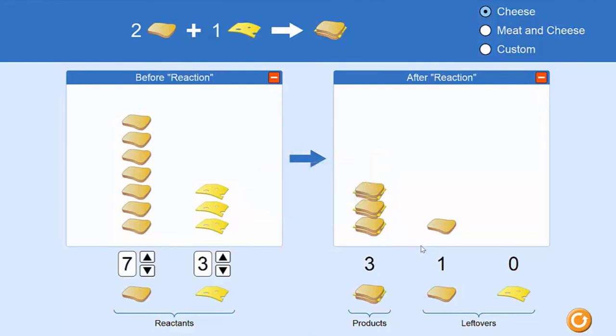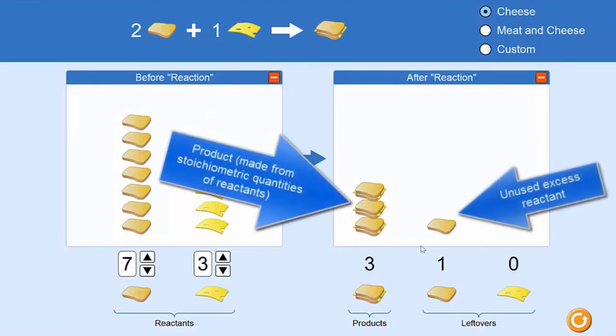The reactants that aren't completely used up are called the excess reactants. Here it was the bread. So what's left sitting in the reaction vessel or the plate at the end are as much product as was able to be made plus whatever unused excess reactants are left.